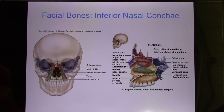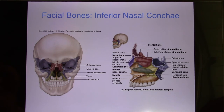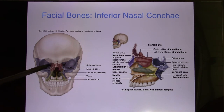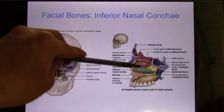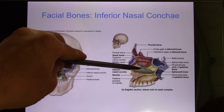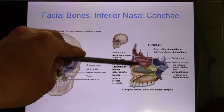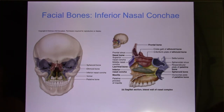The inferior nasal concha is a separate bone, unlike the superior and middle nasal conchae which are part of the ethmoid bone structure — that's why the ethmoid is an irregular bone. All the conchae function to increase surface area to heat up the air.